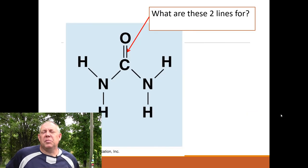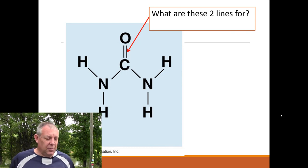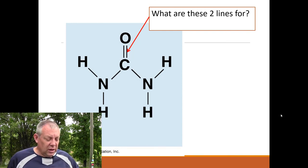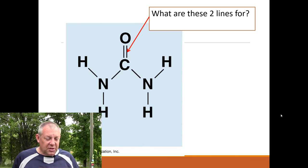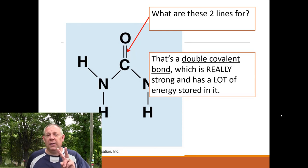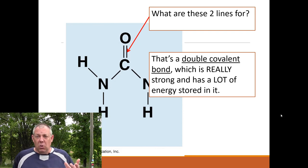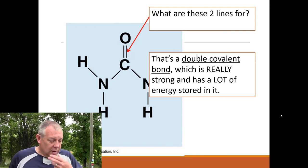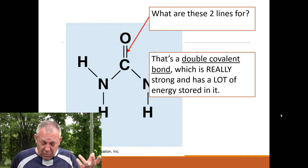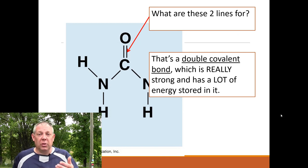A couple more details to keep in mind throughout the semester. Looking at the urea molecule: single lines represent a covalent bond, but what about two lines? That's a double covalent bond — two electrons being shared. In urea, carbon and oxygen share two electrons, which is a much stronger bond. Every bond requires energy and stores energy; two bonds store more. You can also have a triple bond, which stores a tremendous amount of energy. Consequently, triple bonds are harder to break, but when you do, they release much more energy.